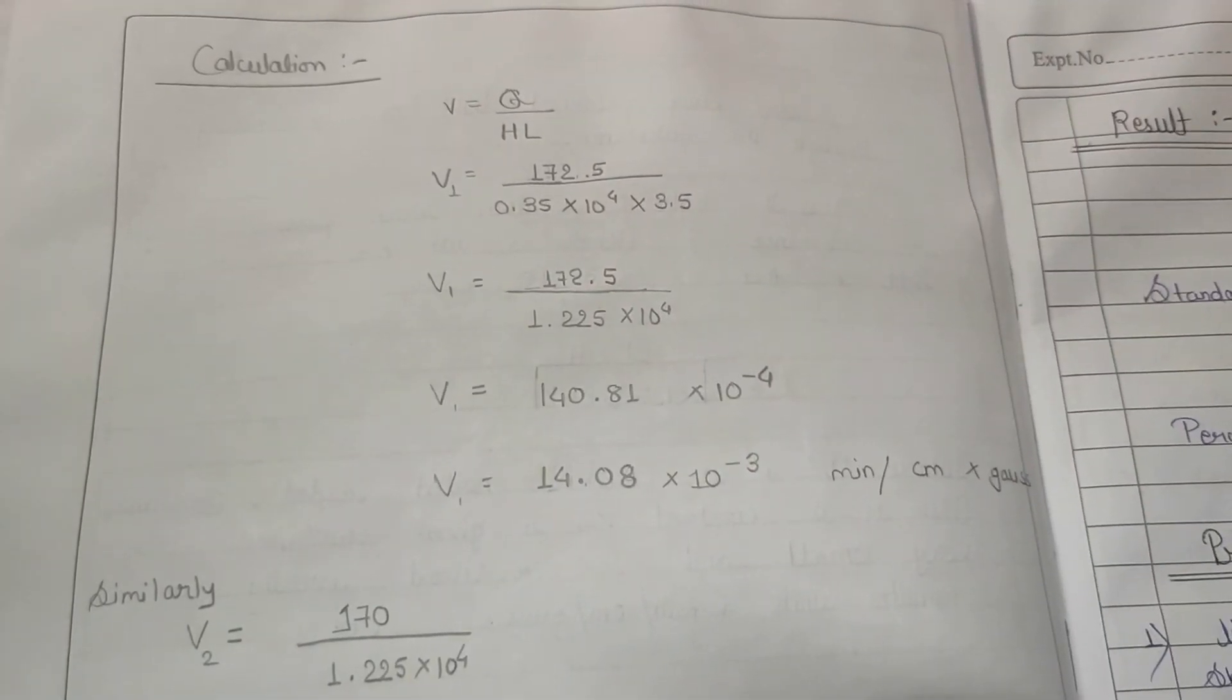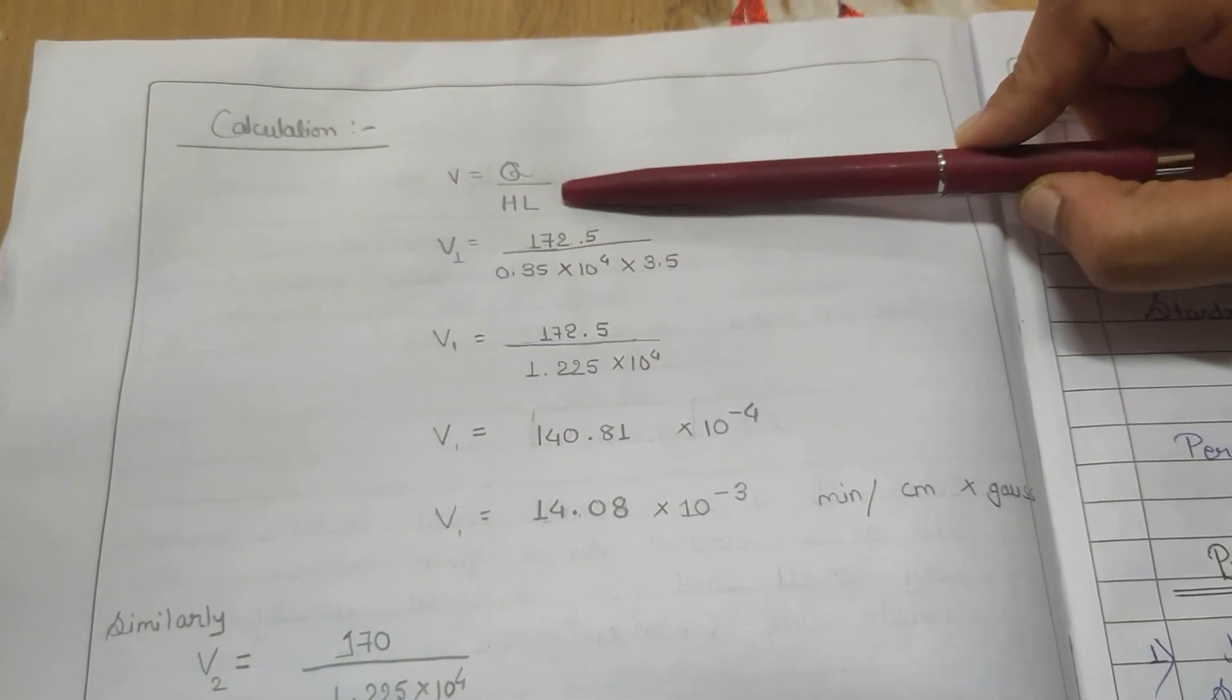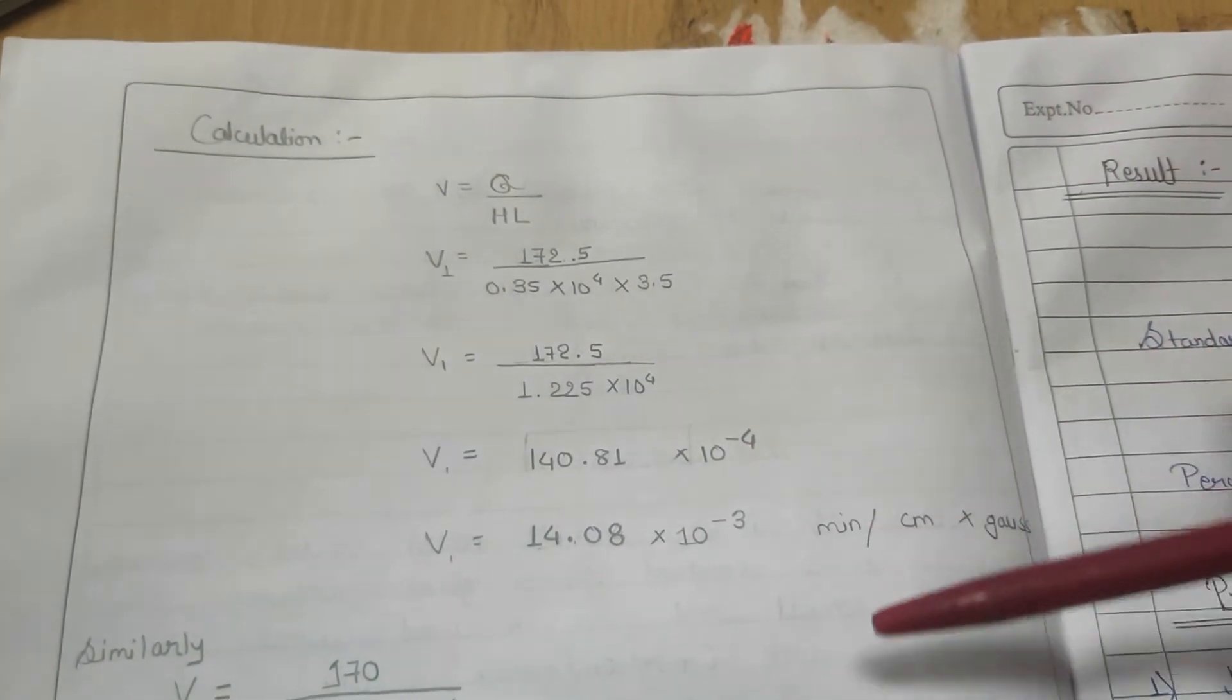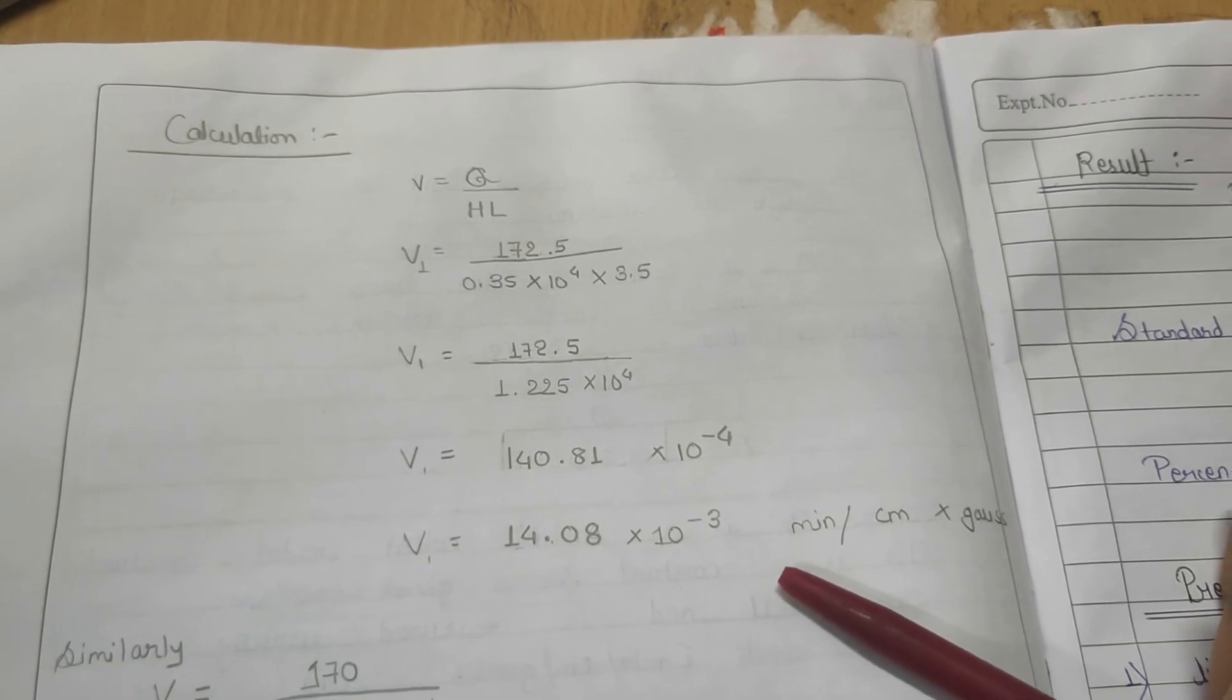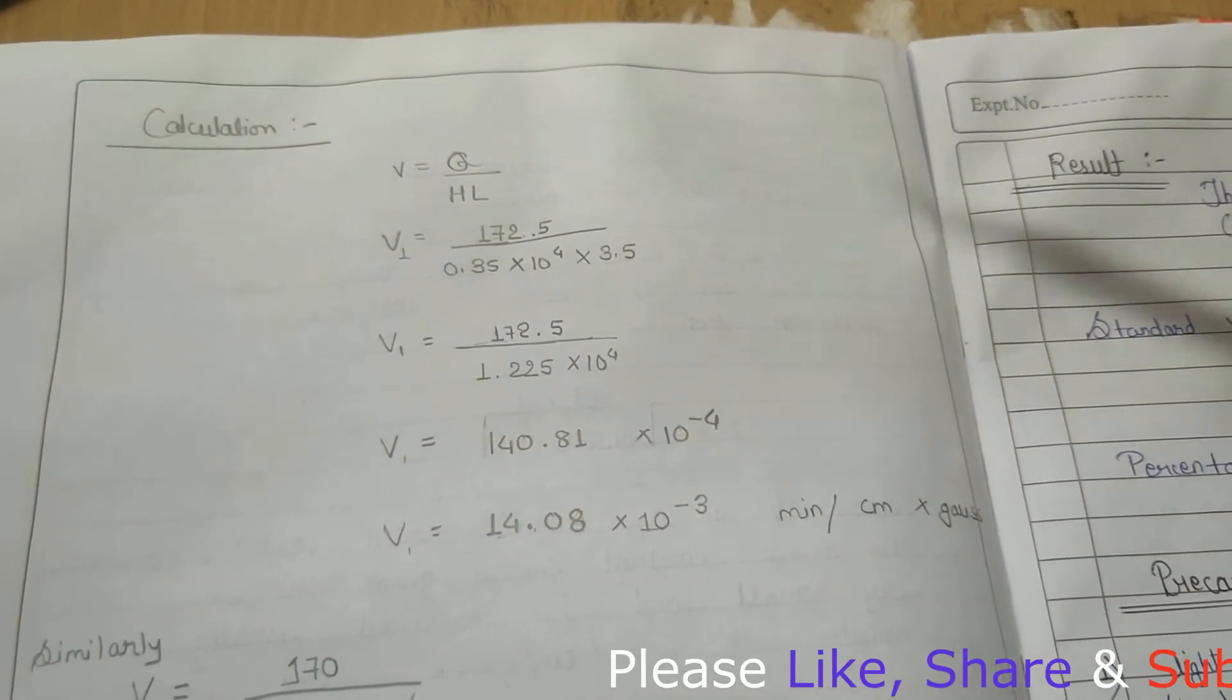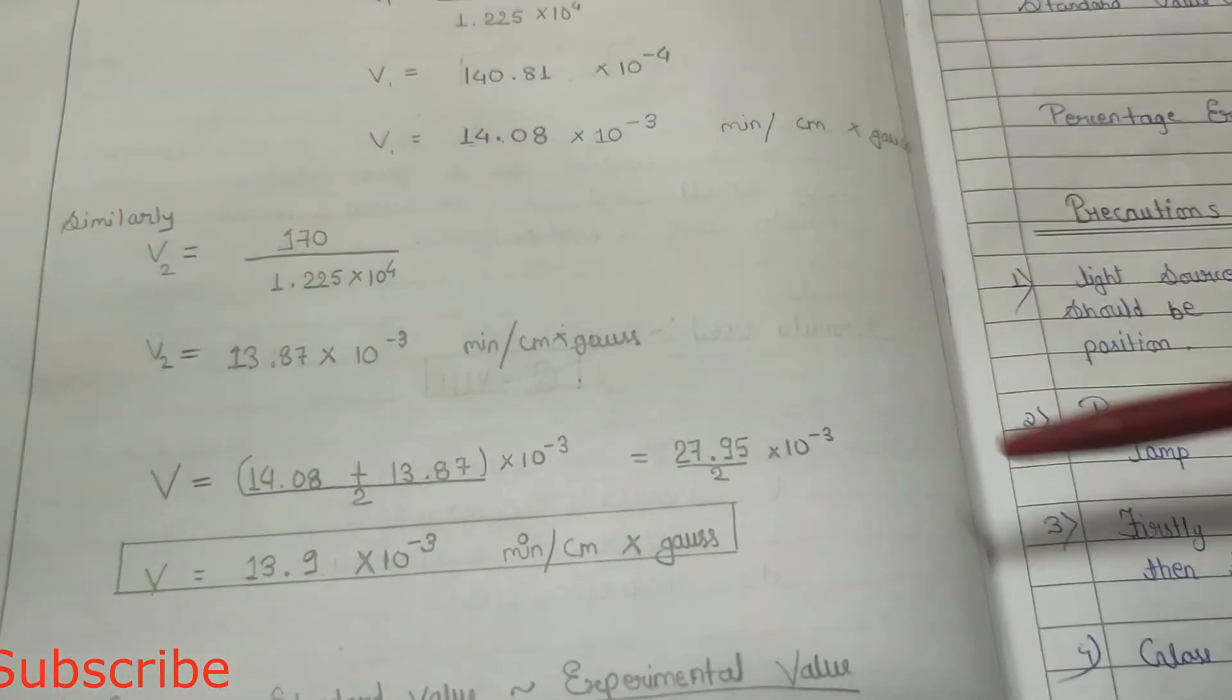Now let's go to the calculation part. This is the formula: V is equal to θ upon H times L. After putting all the values, we have the Verdet's constant for water 14.08 times 10 to power minus 3 minute per centimeter Gauss. We will do the same process for V2.